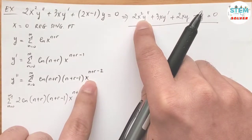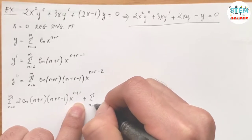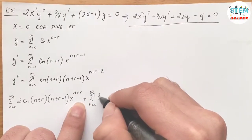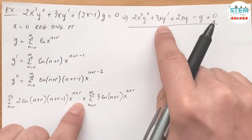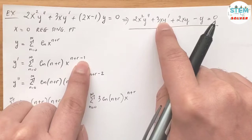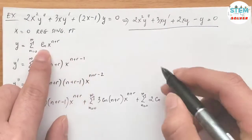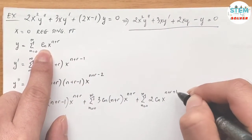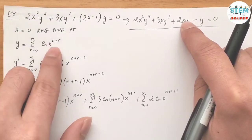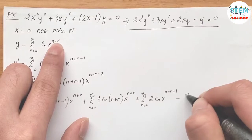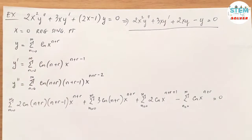For the 3xy′ term: x times xⁿ⁺ʳ⁻¹ gives xⁿ⁺ʳ, so we get + Σ from 0 to ∞ of 3cₙ (n+r) xⁿ⁺ʳ. Plus Σ from 0 to ∞ of 2cₙ xⁿ⁺ʳ⁺¹ — since x times xⁿ⁺ʳ adds 1 to the exponent. Minus Σ from 0 to ∞ of cₙ xⁿ⁺ʳ = 0.